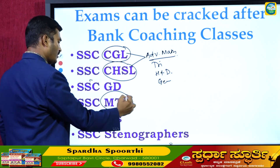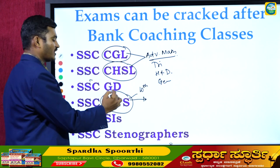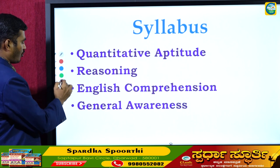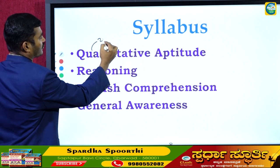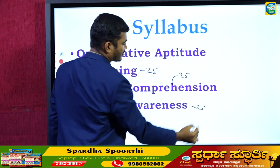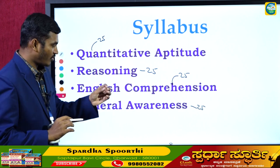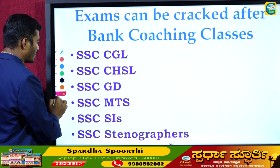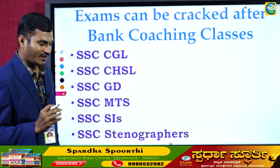SSC GD and SSC MTS exams are at the 10th standard level. The MTS exam had four sections — Quantitative Aptitude, Reasoning, English, and General Awareness — each of 25 marks, totalling 100 questions in 90 minutes. It is a very easy exam. You can refer to past MTS question papers to get an idea of the level.